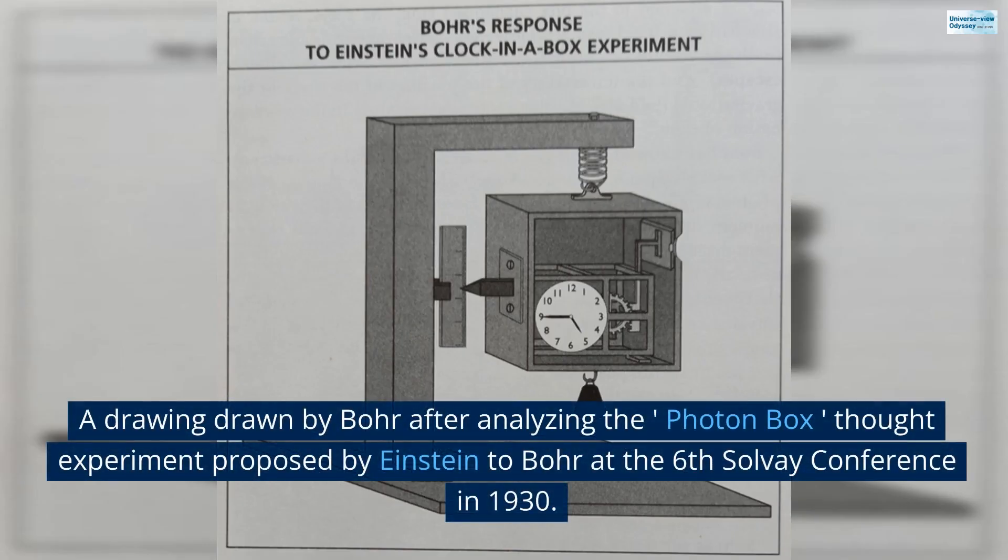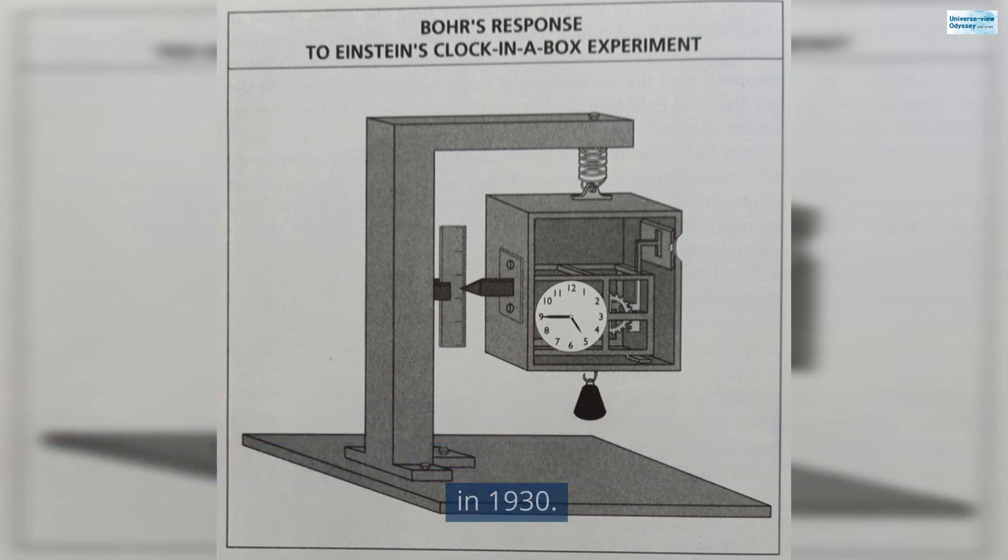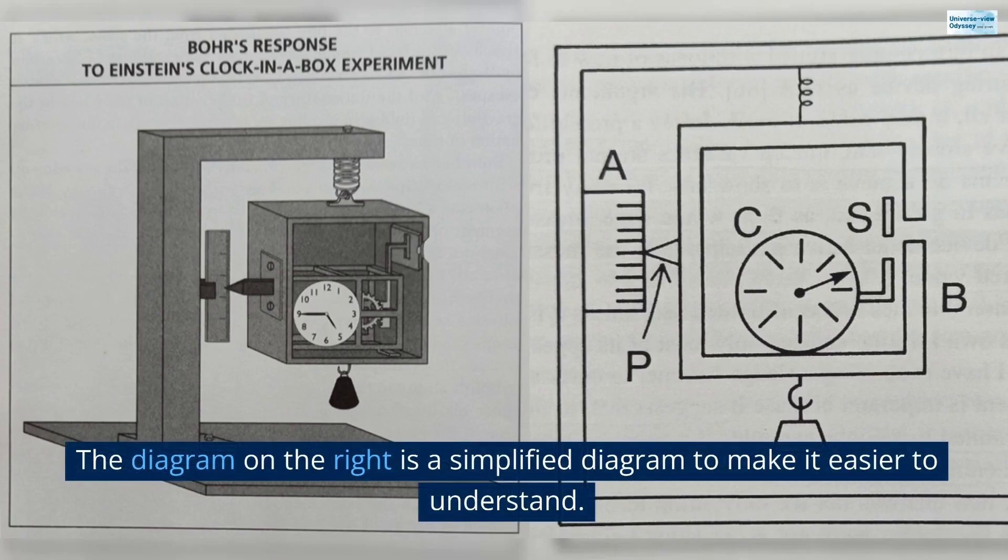A drawing drawn by Bohr after analyzing the photon box thought experiment proposed by Einstein to Bohr at the 6th Solvay Conference in 1930. The diagram on the right is a simplified diagram to make it easier to understand.